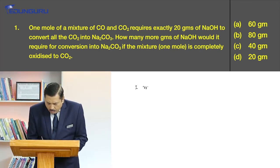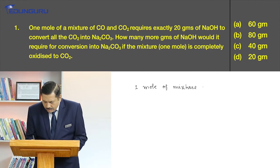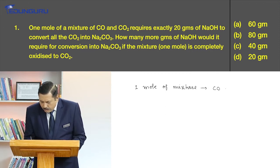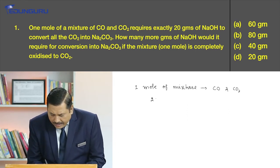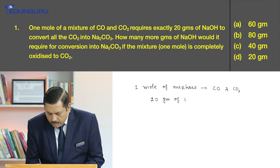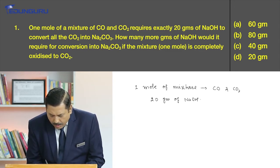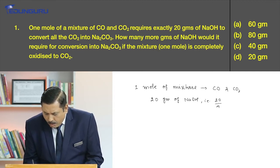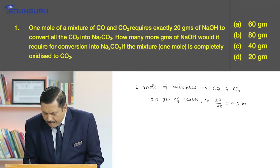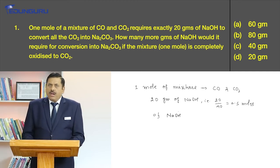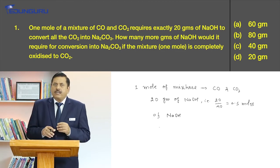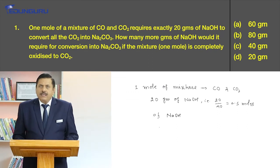We have one mole of mixture which contains both carbon monoxide and carbon dioxide. It required 20 grams of NaOH, that is 20 upon 40, that is 0.5 moles of NaOH. And what NaOH will do? NaOH will convert carbon dioxide to Na2CO3. It will not react with carbon monoxide.